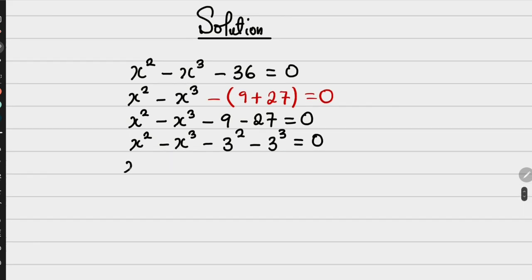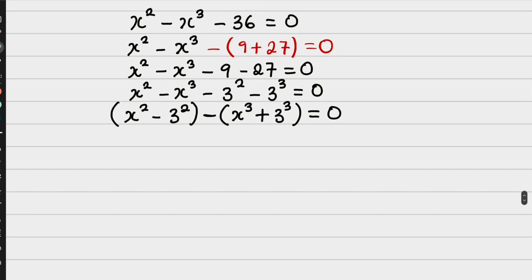Now I can have it as x squared minus x cubed minus 9 minus 27 is equal to 0. Now, this is x squared minus x cubed minus 3 cubed is equal to 0. So I can have it as x squared minus 3 squared. Can you see what I'm doing? Then I have it this way. Then I have minus into x cubed plus 3 cubed. It's equal to 0. I just use a simple trick.